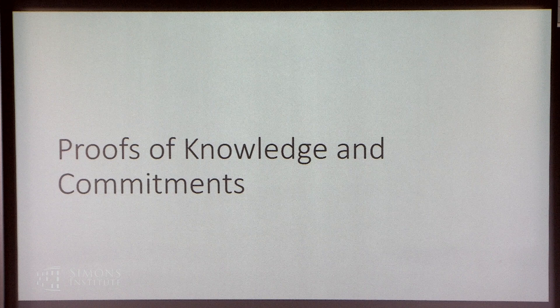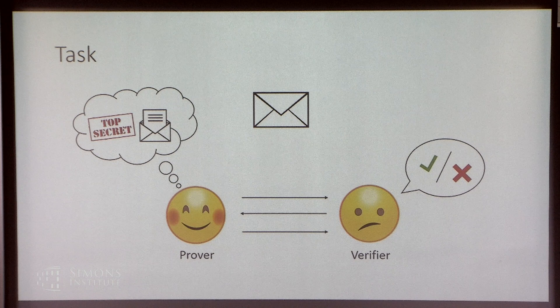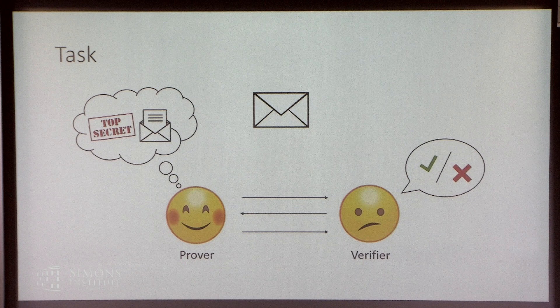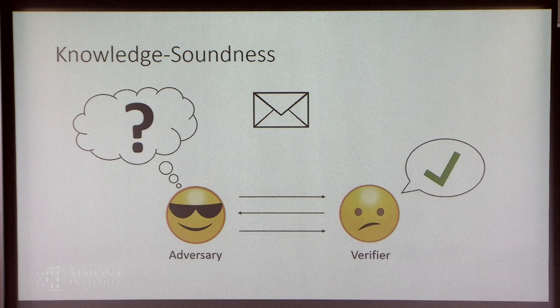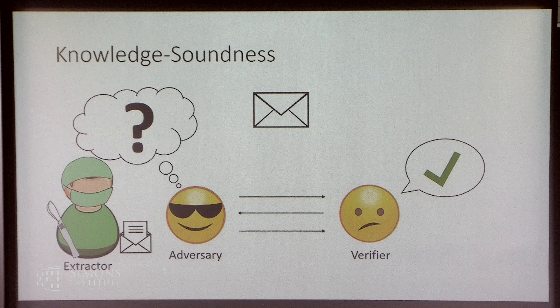Let's talk about proofs of knowledge and commitments. Our task is like this: we have a cryptographic commitment that the prover and verifier both know. The prover wants to convince the verifier that they know an opening to this commitment without leaking any information. The two exchange messages, and then the verifier accepts or rejects. We formalize this property by saying that if an adversary convinces the verifier to accept most of the time, then there's also a knowledge extractor who uses information from the adversary to extract an opening to the cryptographic commitment.